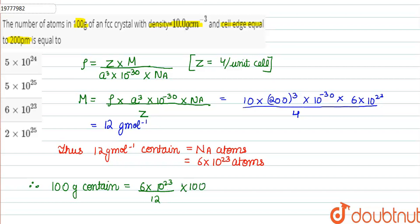Therefore, 100 grams contains 6 into 10 raised to the power 23, upon 12, into 100. We cancel 12 and 100 to get 50, and the answer is 5 into 10 raised to the power 24 atoms.